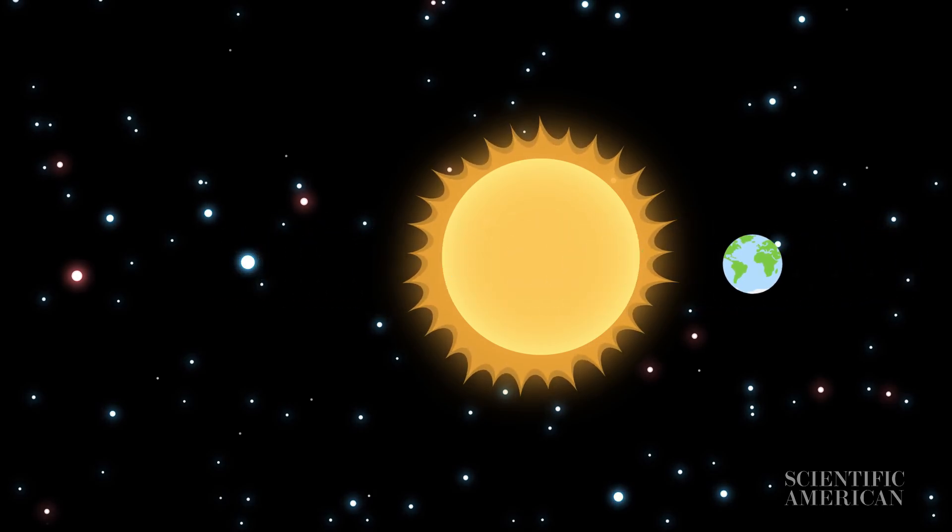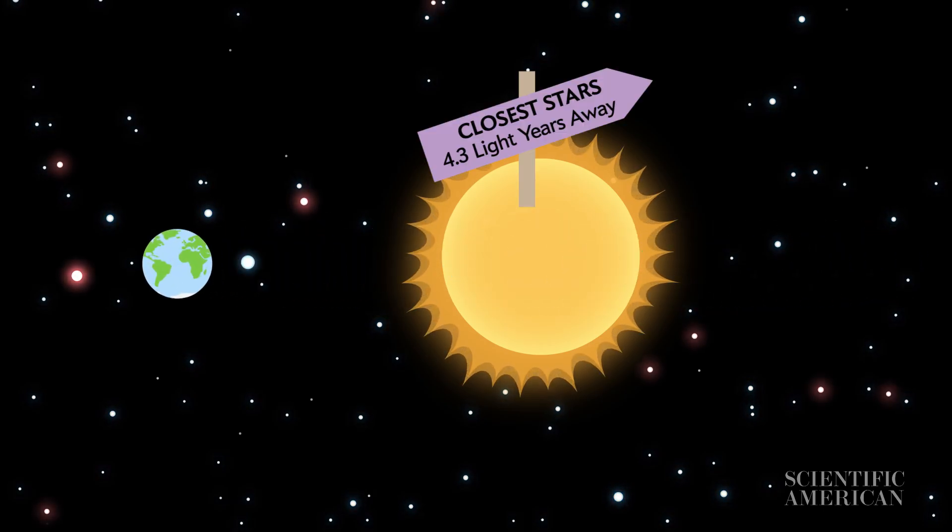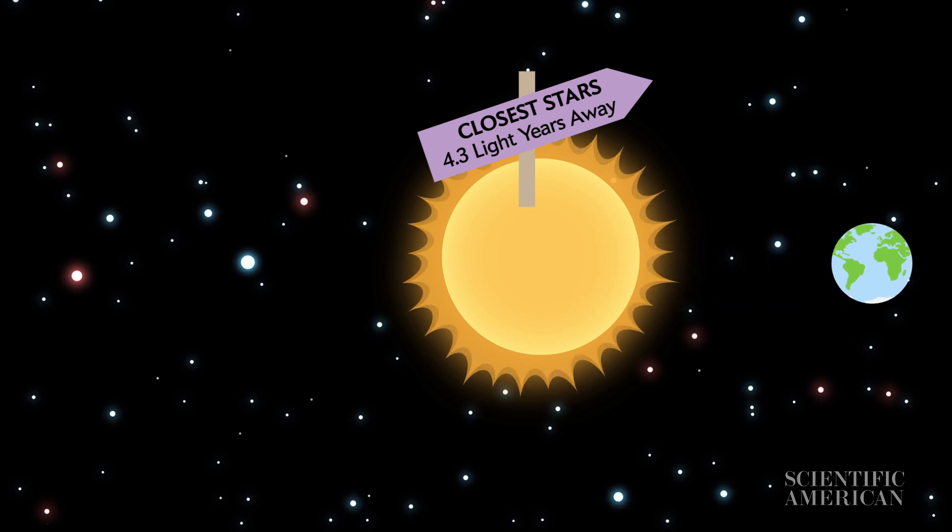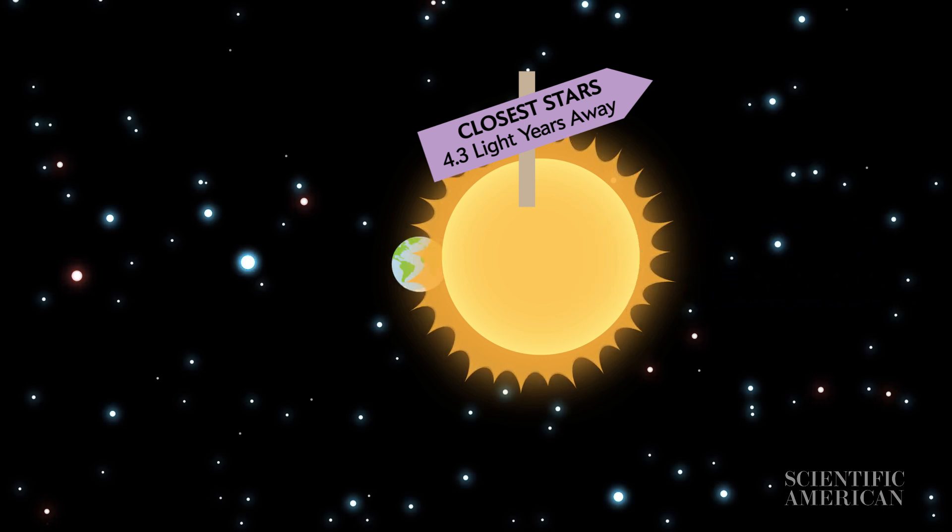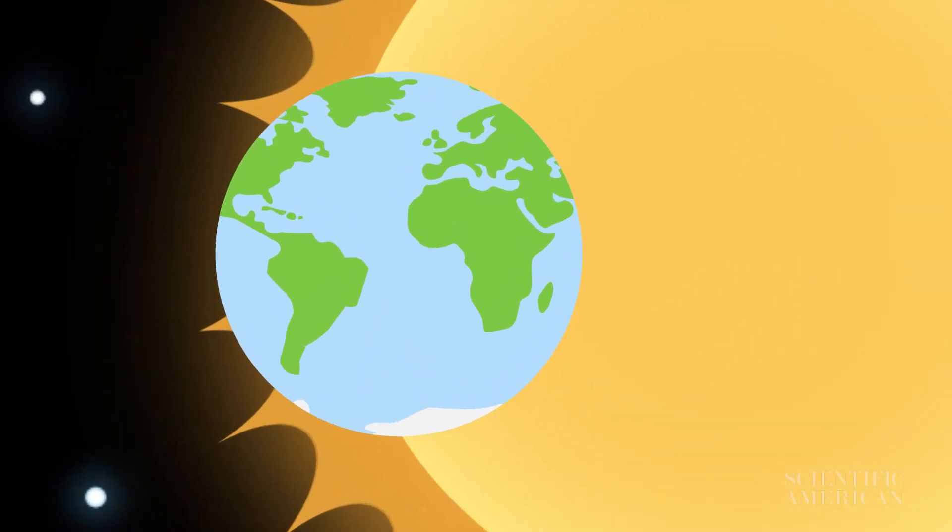The closest stars to our solar system are about 4.3 light-years away from Earth. But how do we know that distance? It seems like measuring a star's distance should be impossible.